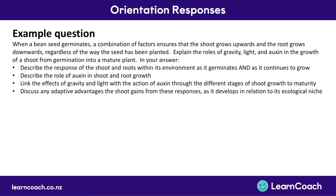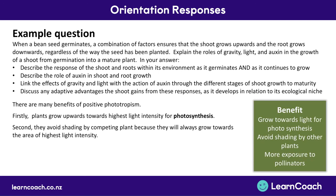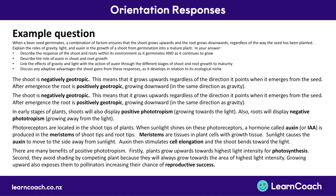Finally, for excellence-level answers, discuss the benefits that shoots gain from these responses. There are three main benefits: first, the plant grows towards the highest intensity of light — plants need light for photosynthesis to create energy. Second, they avoid shading by competing plants, so their light isn't blocked and they can do more photosynthesis. Third, growing upwards exposes them to pollinators — birds, bugs, and bees are more likely to pollinate flowers positioned up in the sunlight, increasing the chance of reproductive success. Those are the benefits of why shoots grow upwards in response to light.